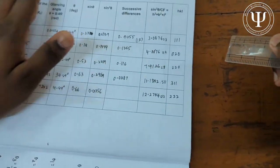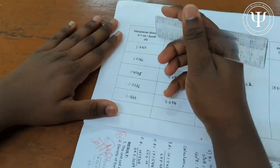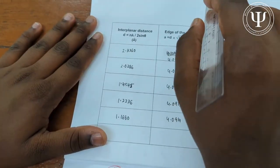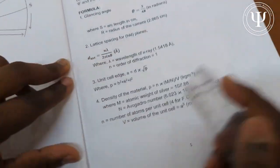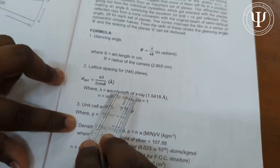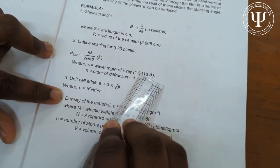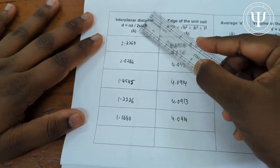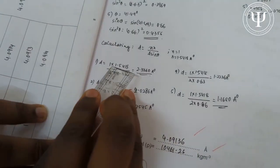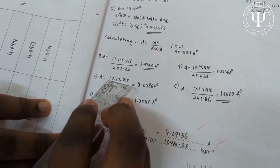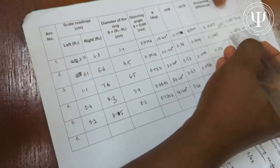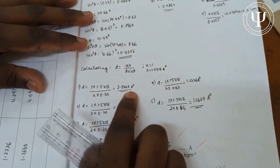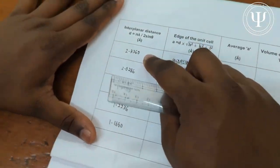Next, find the interplanar distance d using d = nλ / 2sinθ. Here n = 1 (order of diffraction) and λ = 1.5418 Ångström units. Keep the units in Ångströms since we need d in Ångströms. For example, d = (1 × 1.5418) / (2 × 0.33) = 2.3360 Å. Repeat this for all five sinθ values to get five d values.